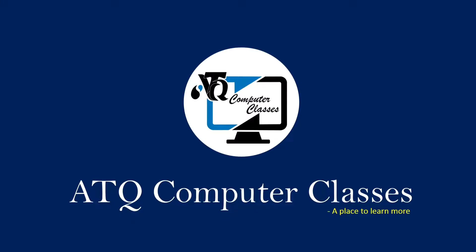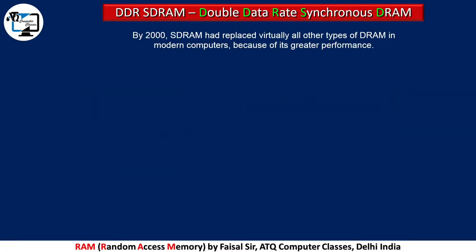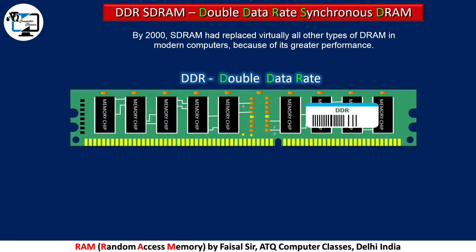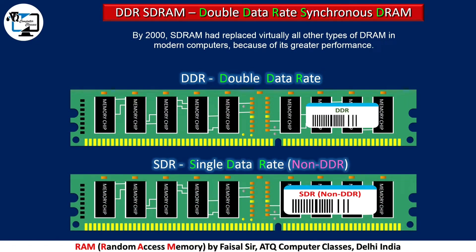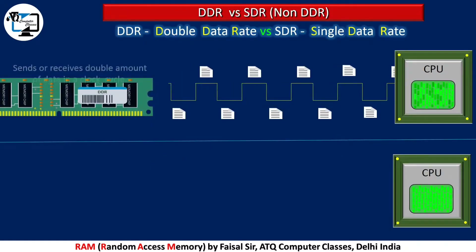Welcome to ATQ Computer Class. By year 2000, SDRAM had replaced virtually all other types of DRAM in modern computers because of its greater performance. The new technology of SDRAM was introduced as DDR. DDR stands for Double Data Rate, while all older RAM was SDR or non-DDR. Let's understand the difference between DDR and SDR RAM.